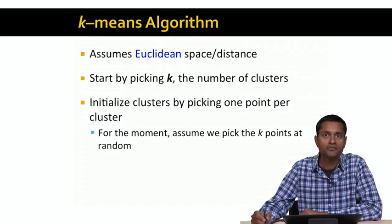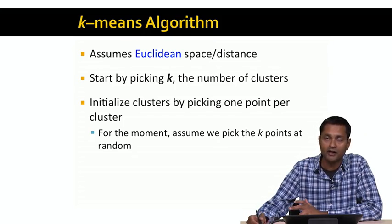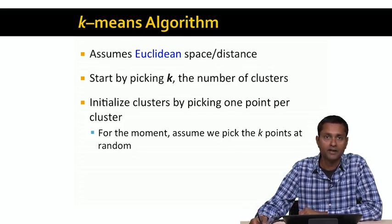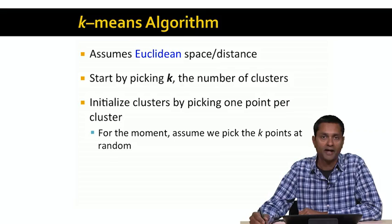The k-means algorithm assumes a Euclidean space and a Euclidean distance. The first step is to pick k, the number of clusters. For now, let's just assume that we pick a number k — that's the number of clusters we finally want. Towards the end, I'll show you how to actually pick this value k. We're going to initialize our k clusters by picking one point per cluster. For example, we could just pick k points at random and assign one point to each cluster. Later on, we'll examine other ways of doing this much better.